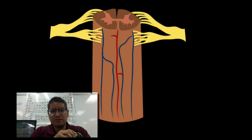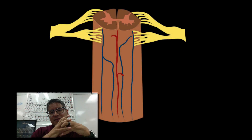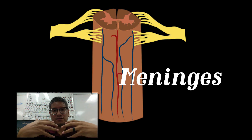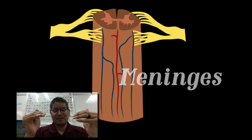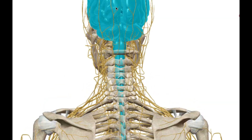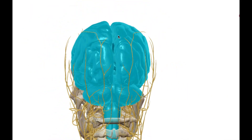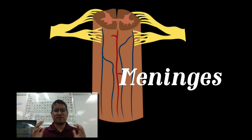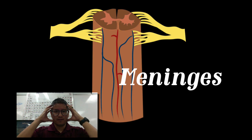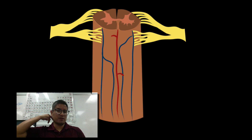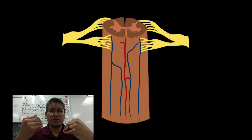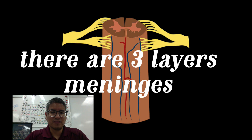Welcome to another anatomy and physiology video. Today we're discussing the meninges of the nervous system, specifically highlighting the central nervous system — the brain and the spinal cord. The brain and spinal cord are protected by bone — the skull and vertebrae — and more internally by what we call meninges, which are different layers of tissue that protect these vital organs.